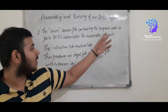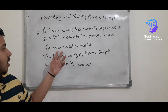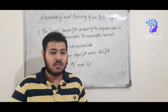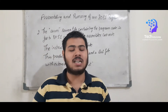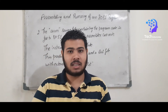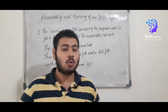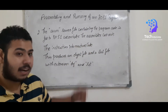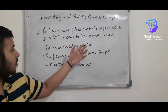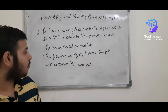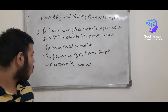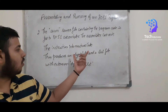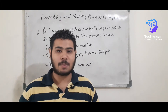Now, what does the assembler do? The assembler converts the instructions of that program code into machine code. As we all know, the 8051 microcontroller understands only binary language — it understands only in the form of zeros and ones. So for that, we need an assembler which converts this code into machine language. This assembler then produces an object file and a list file with extensions .OBJ and .LST.